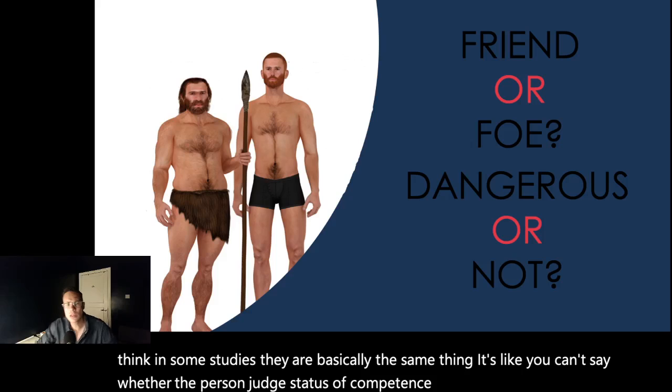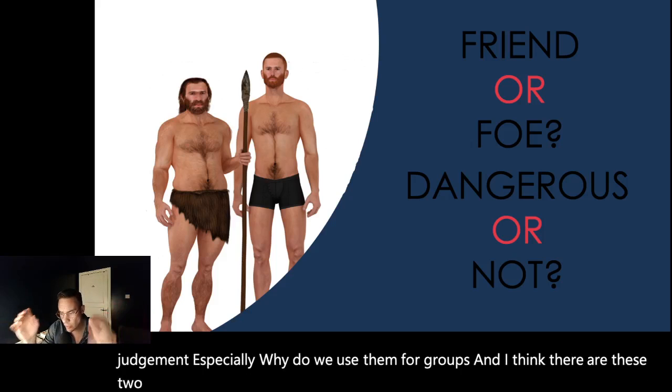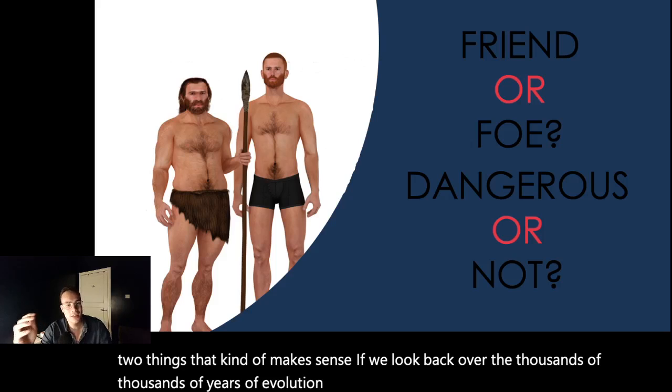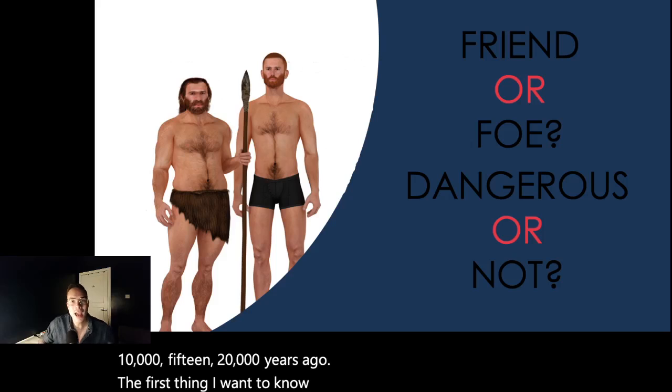So why do we do these judgments, especially why do we use them for groups? And I think there are these two things that make sense. If you look back over the thousands and thousands of years of our evolution, if I met you somewhere outside of my camp 10,000, 15,000, 20,000 years ago, the first thing I want to know is, are you a friend or a foe? Are you on my side or are you not on my side? So this is the first judgment. My team, not my team.